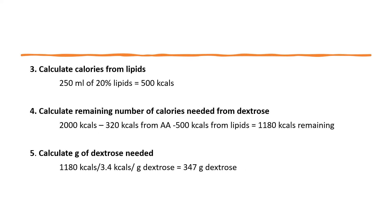Third, calculate calories provided from lipids: 250 milliliters of 20% lipids equals 500 calories. Then calculate the remaining calories needed from dextrose: 2,000 calories minus 320 calories from amino acids minus 500 calories from lipids equals 1,180 calories needed from dextrose. Then calculate the grams of dextrose needed: 1,180 calories ÷ 3.4 calories per gram = 347 grams of dextrose.